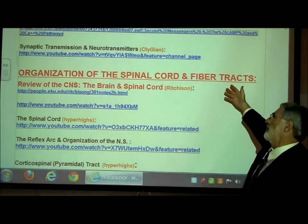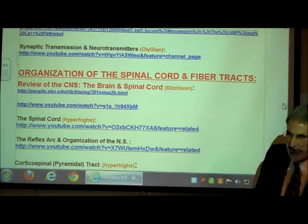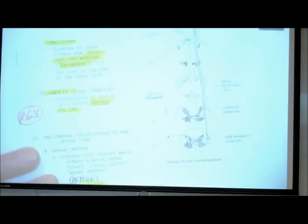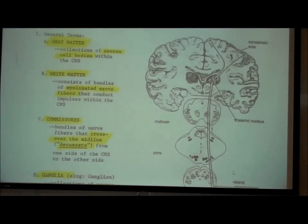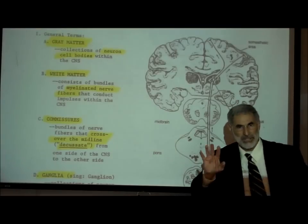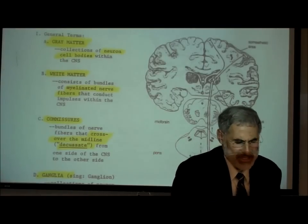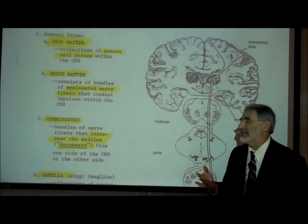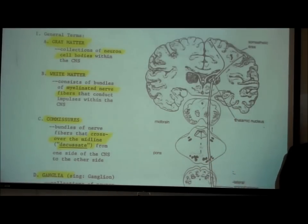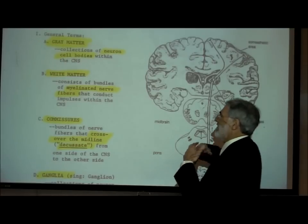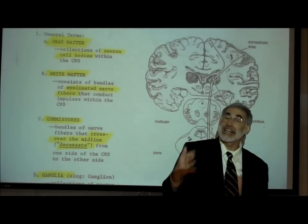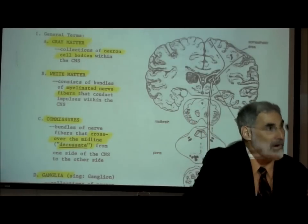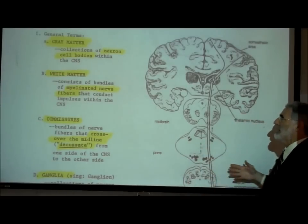Now we want to start talking about the organization of the spinal cord. We are on page 63, and I want to begin by defining four terms. You may have heard these terms in anatomy. I'm going to define them, and probably after I define or describe them, you'll scratch your head. But as I use these terms more and more, you'll start to understand what they mean.